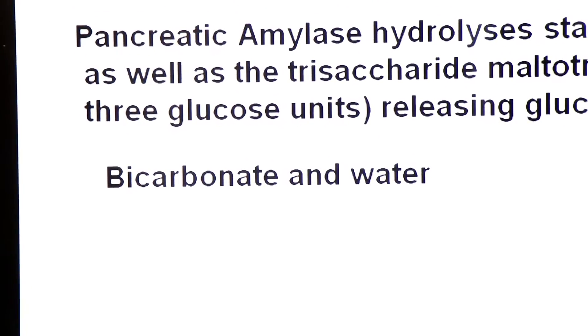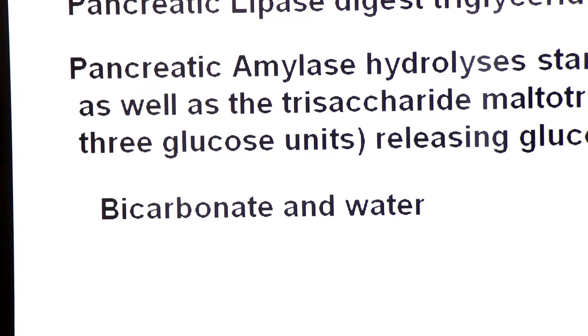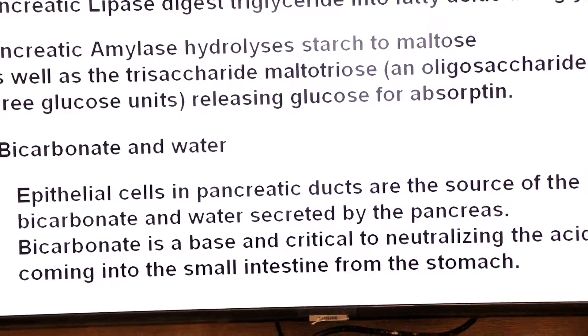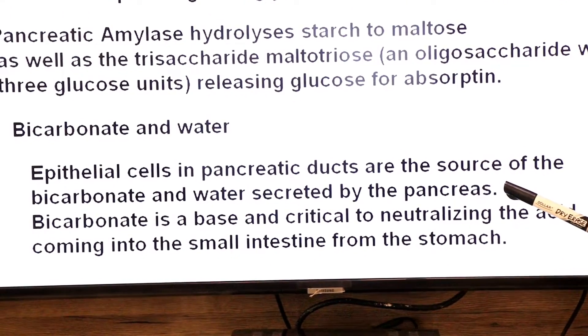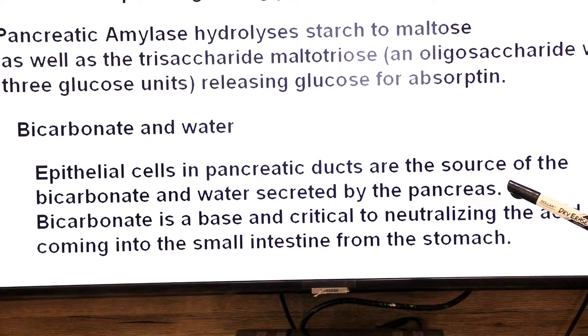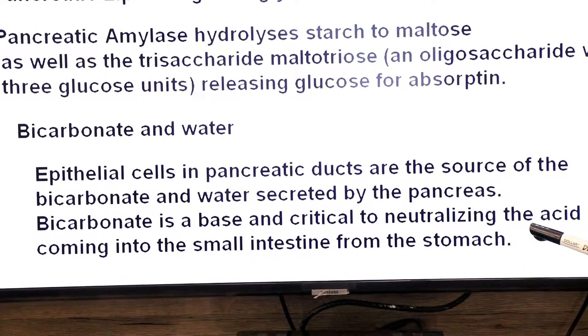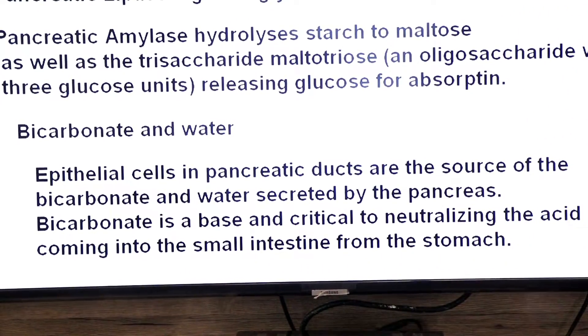Lastly, we will study the function of bicarbonate and water produced from acinar cells. Epithelial cells in pancreatic ducts are the source of the bicarbonate and water secreted by the pancreas. Yeh acid ke response mein release kiya jata hai. Bicarbonate is a base and is critical to neutralize the acidic food coming into the small intestine from the stomach. Stomach se jo acidic content duodenum mein release hota hai, pancreatic juice ke bicarbonates uski acidity ko neutralize kar dete hain.